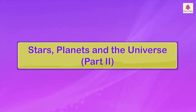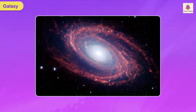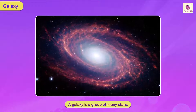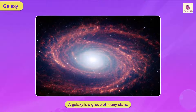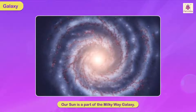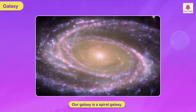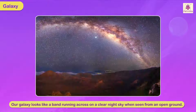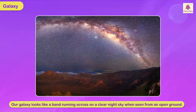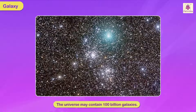A galaxy is a group of many stars. Our Sun is a part of the Milky Way galaxy. Our galaxy is a spiral galaxy and looks like a band running across the sky on a clear night when seen from an open ground. The universe may contain 100 billion galaxies.